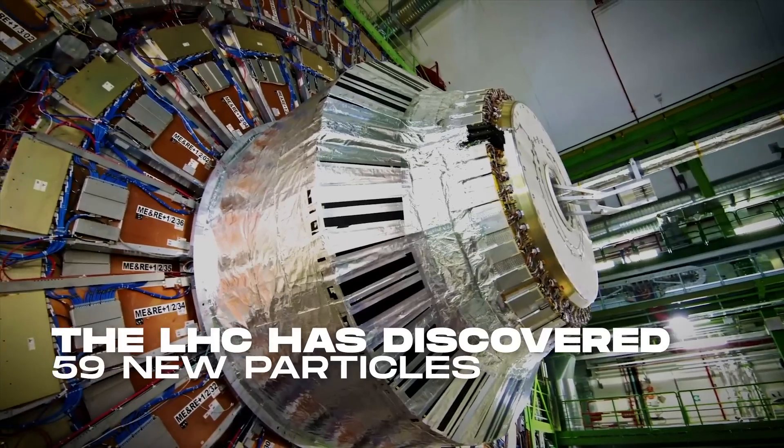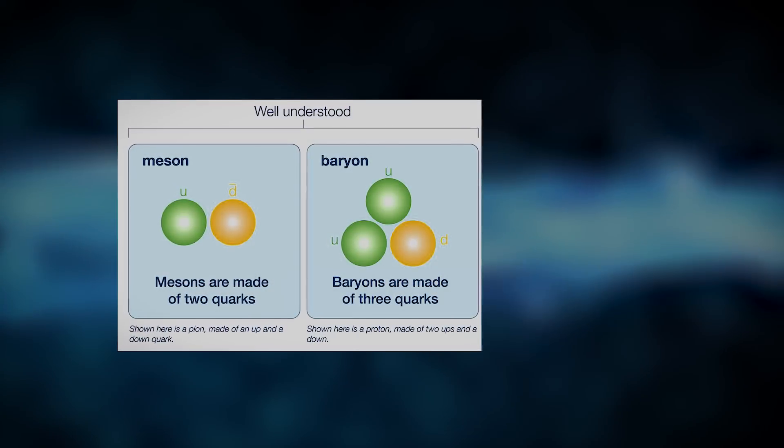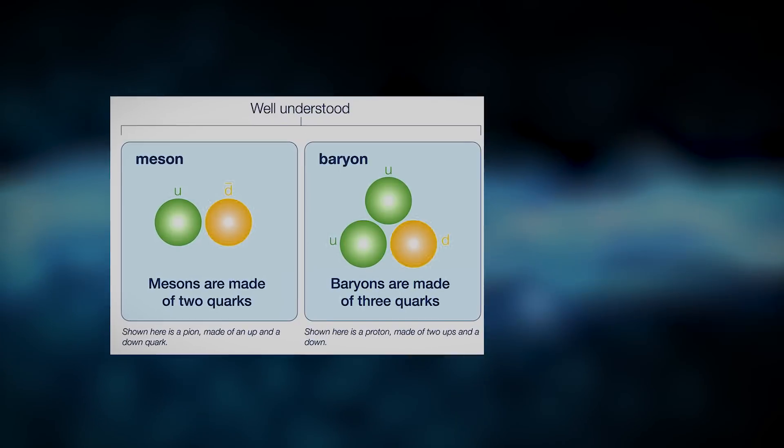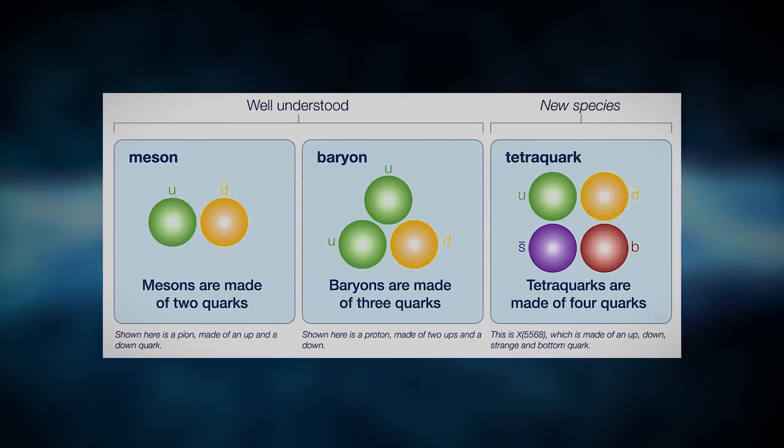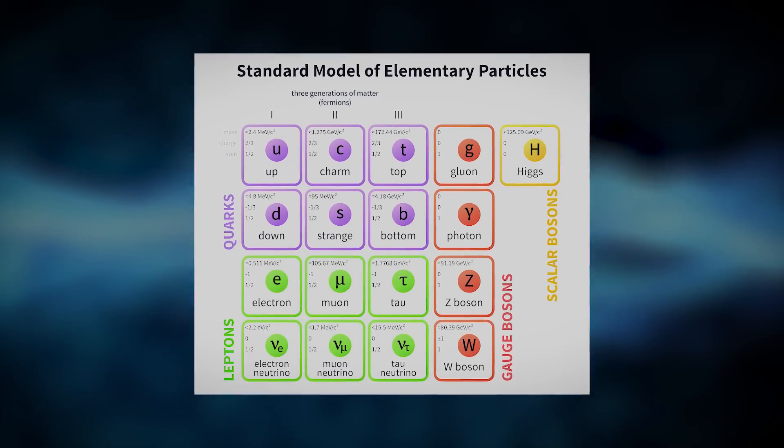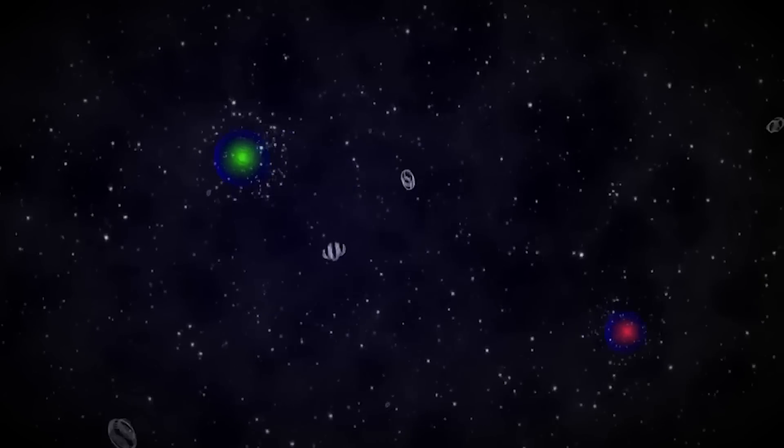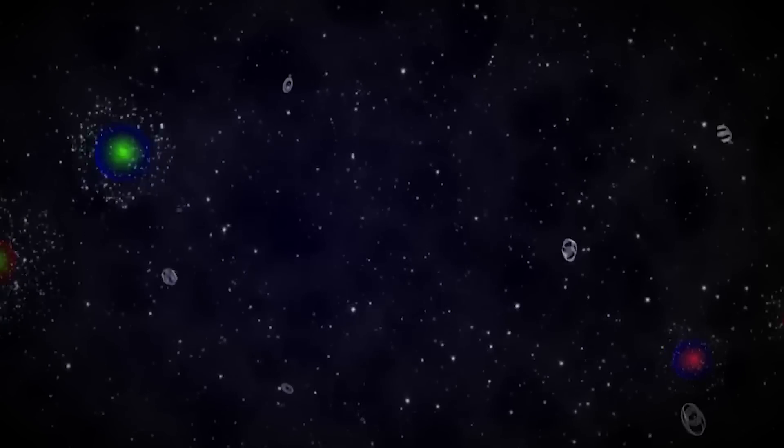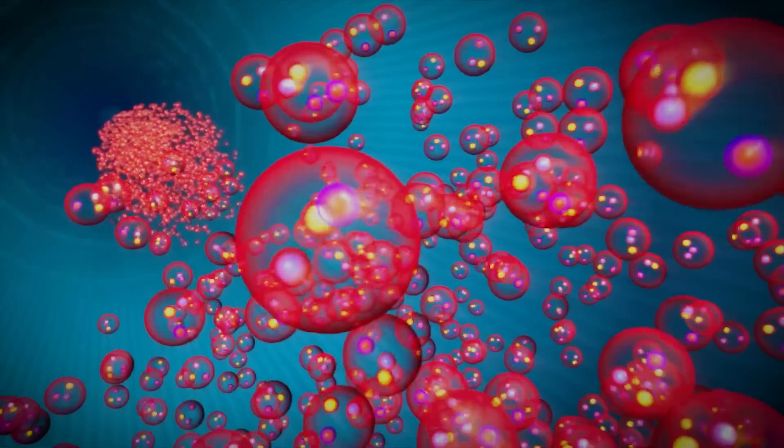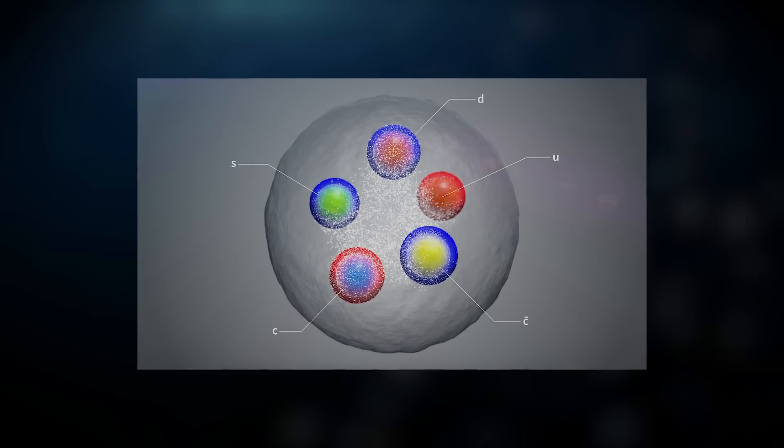The LHC has discovered 59 new particles. These include new mesons and baryons. In addition to the recently discovered tetra-quark, these new particles all include heavy quarks. These tell us what nature accepts as a bonded quark pair, even if just for a short time. They also show us what nature hates. For example, why aren't there any unusual quark pairs?